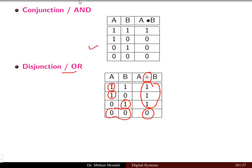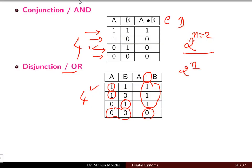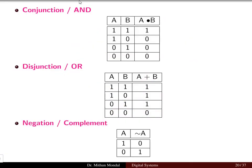Both AND and OR truth tables have four rows, since 2 to the power N equals 4 for two variables. If more variables like C or D are involved, 2 to the power N gives the number of rows. For the NOT operation (complement), there is only one variable A: if the input is one, the output is zero, and if the input is zero, the output is one — it is simply the inverse of the variable.